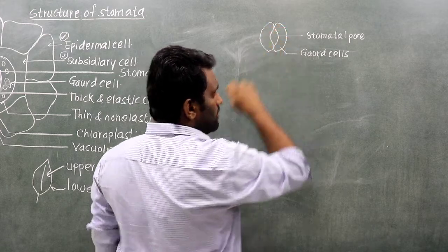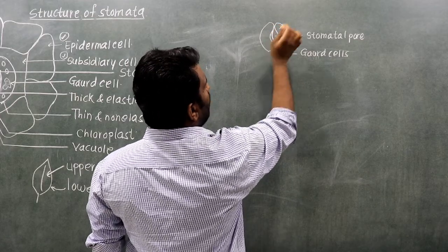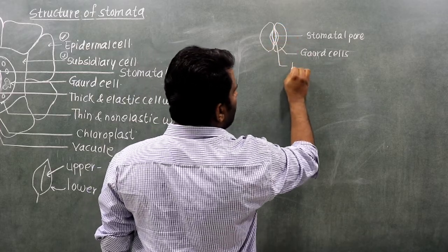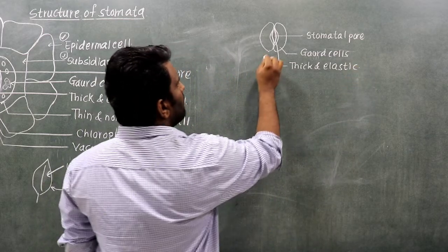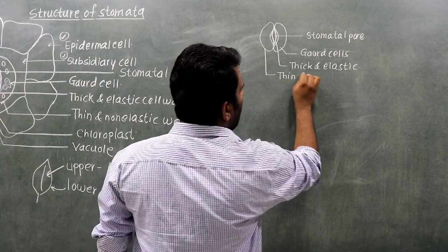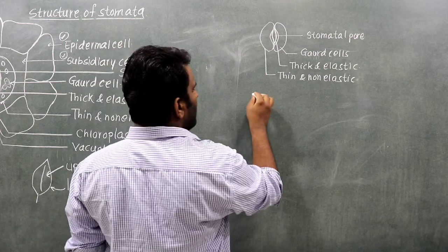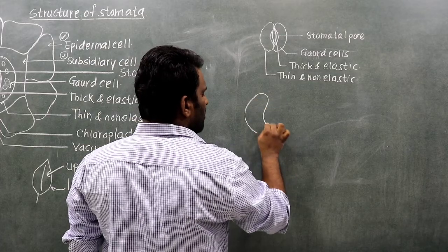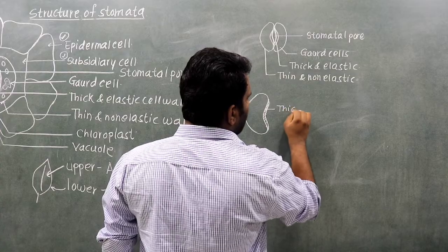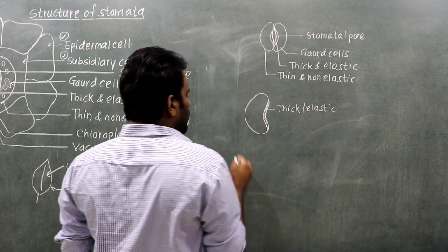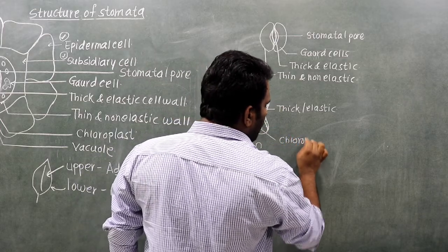The inner wall of the guard cell is thick and elastic, while the outer wall is thin and non-elastic. When the guard cell is turgid, the thick inner wall causes the cell to take on a convex shape, opening the stomata. Chloroplast is also present in the guard cell, enabling photosynthesis.